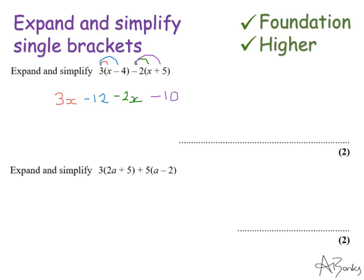My second mark is for simplifying so I'm just going to collect these terms together. So I have a 3x and a minus 2x so altogether that's just 1x which I can just write as x and then I also have a minus 12 and a minus 10 so altogether that is minus 22. That's the first question done.